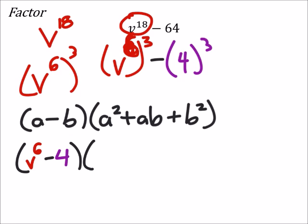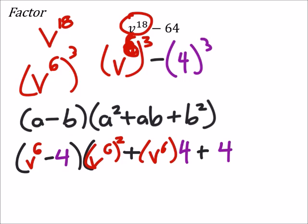And then my A again is v to the power of 6, but this is going to be squared. Plus A, which is v to the power of 6, times B, which is 4, and then plus B, which is 4, but squared.